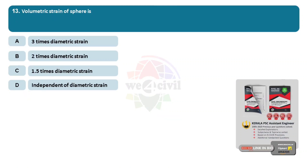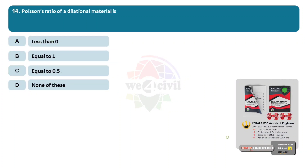Question 13, volumetric strain of a sphere is? Options: A, 3 times diametric strain. B, 2 times diametric strain. C, 1.5 times diametric strain. D, independent of diametric strain. Answer is Option A, 3 times diametric strain. Question 14: Poisson's ratio of a dilational material is? Options: A, less than 0. B, equal to 1. C, equal to 0.5. D, none of these. Answer is A, less than 0.